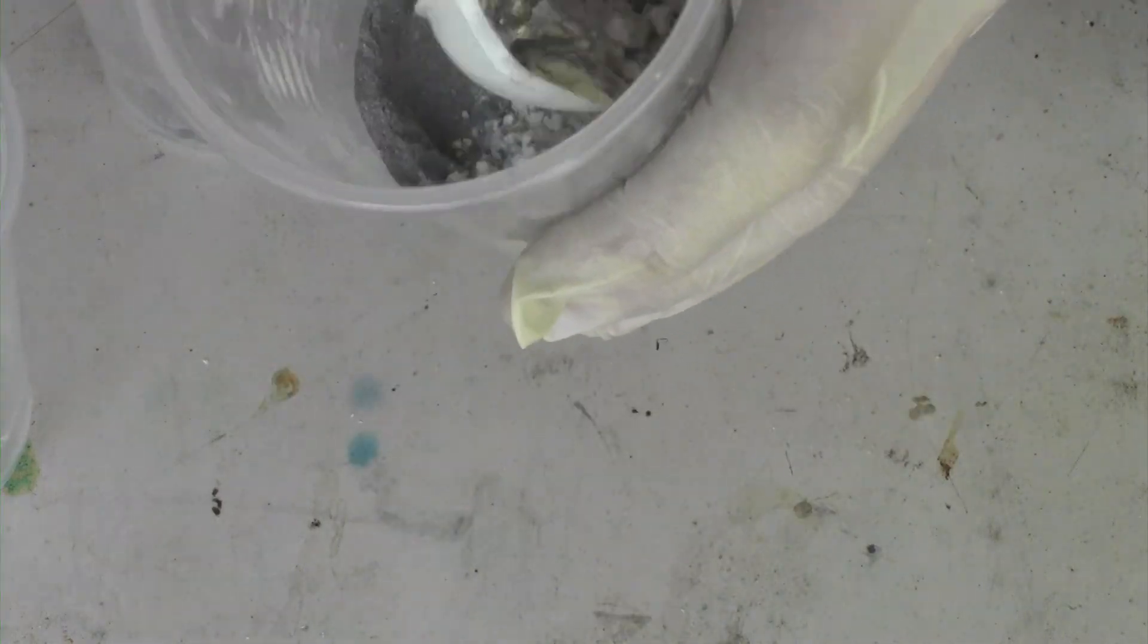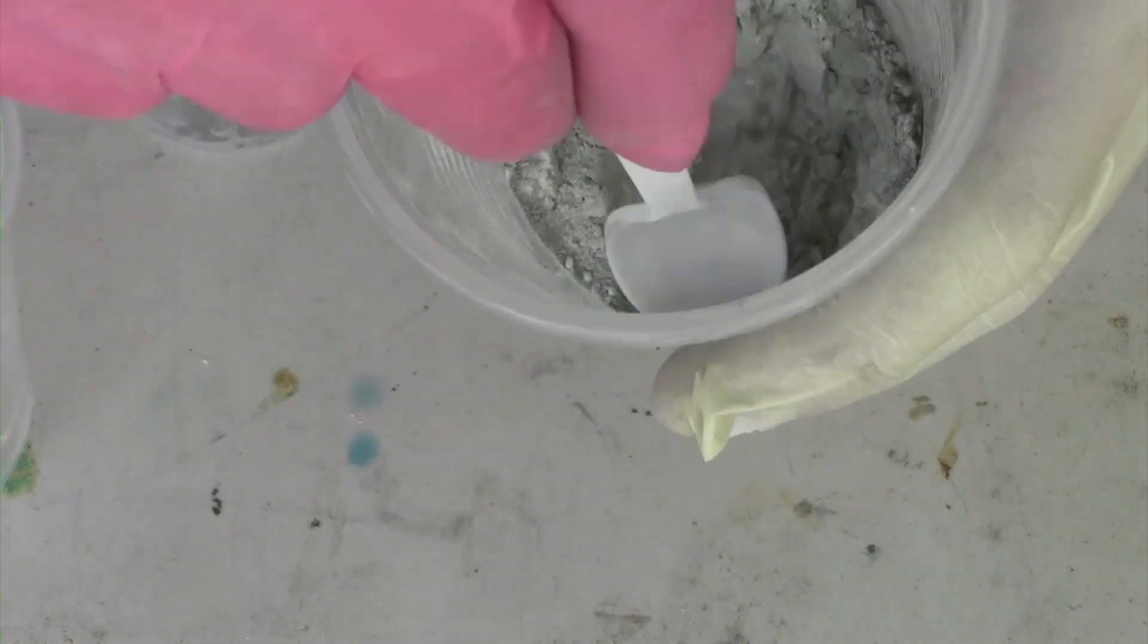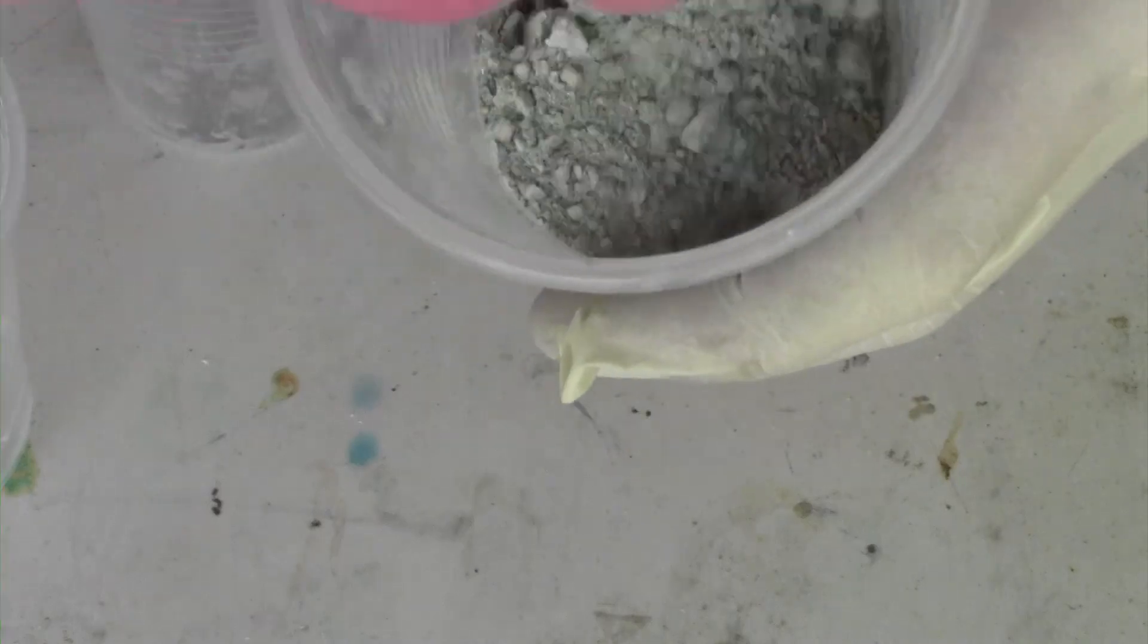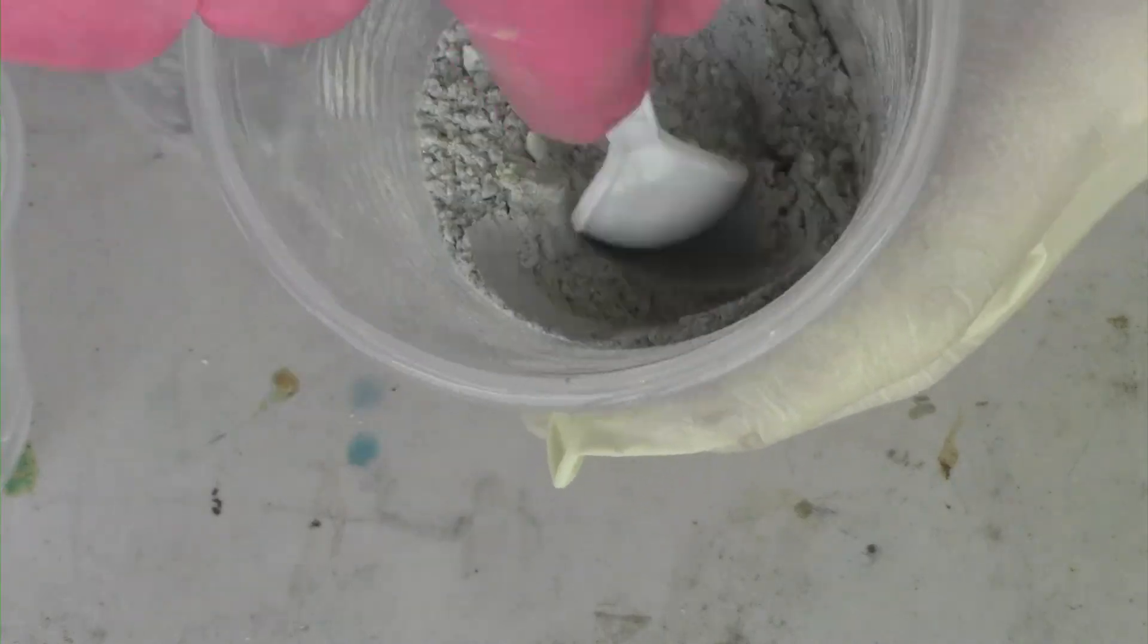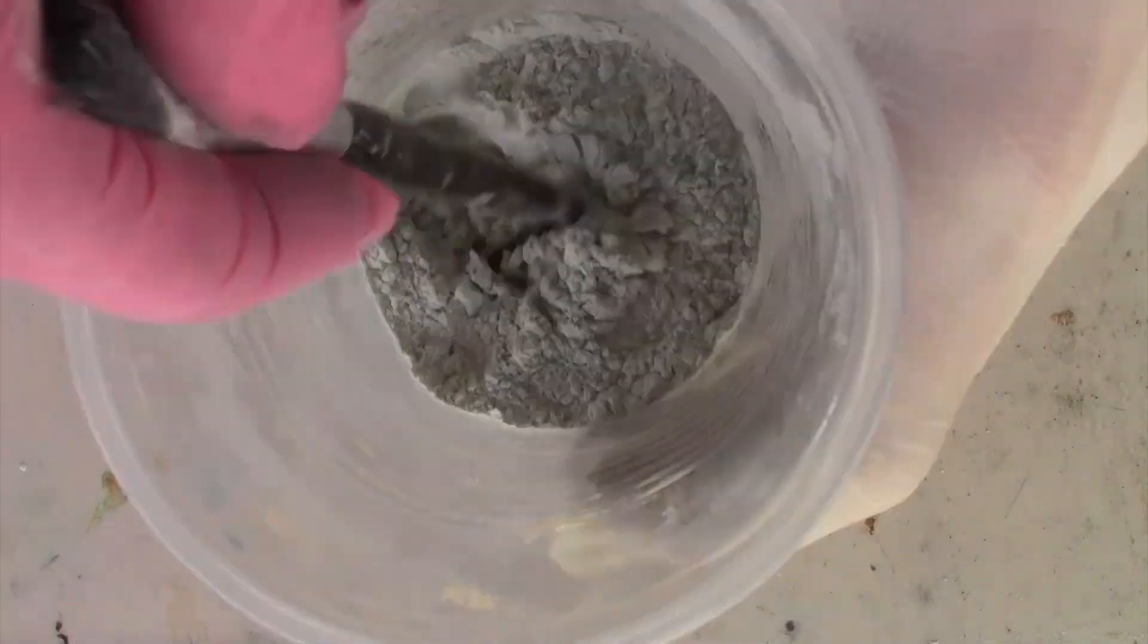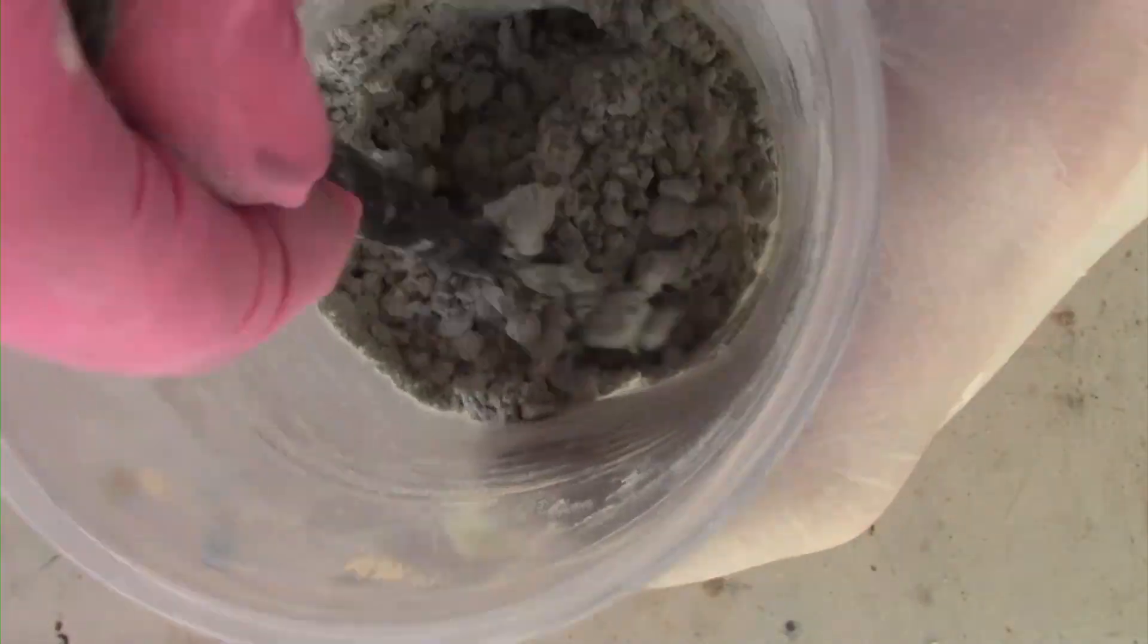If the composition clumps, make sure you break up any clumps. Adding it to a ziploc bag and giving it a good shake helps. Just be cautious with any static charge that might build up. Now add the water drop wise by a couple mils each time.